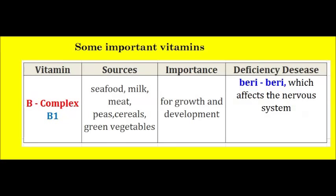Vitamin B1. Sources of Vitamin B1 are seafood, milk, meat, peas, cereals, and green vegetables. The importance of Vitamin B1 is for growth and development. Deficiency disease due to lack of Vitamin B1 is beriberi, which affects the nervous system.